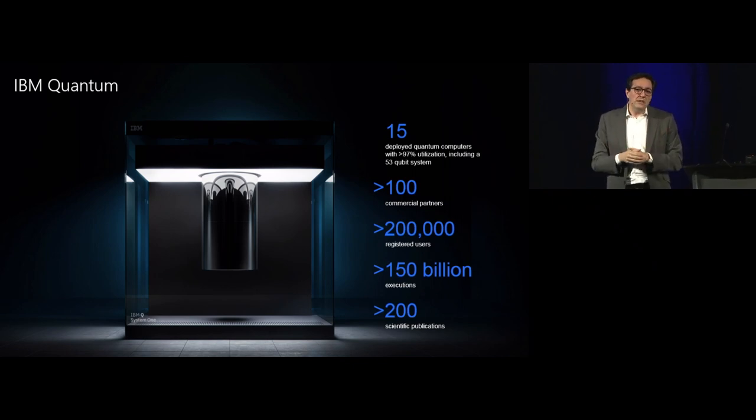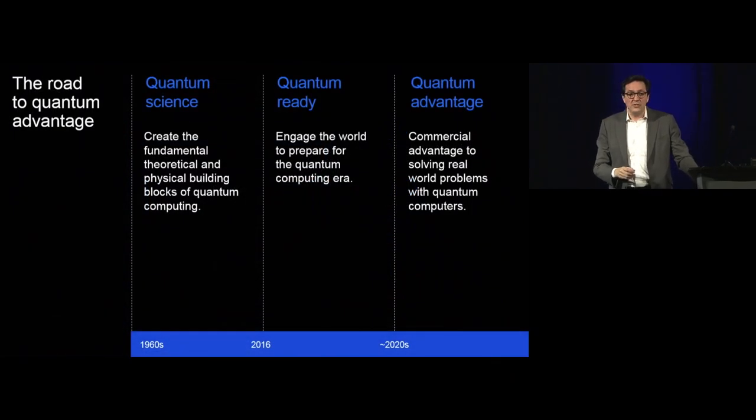At present, we have 15 deployed systems with 97% utilization, over 220,000 registered users, over 12,000 monthly active users, over 150 billion executions, and there have been over 220 scientific publications that have been enabled by using our systems.